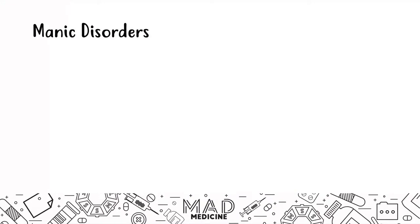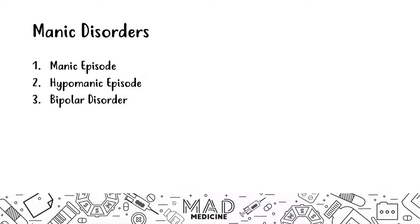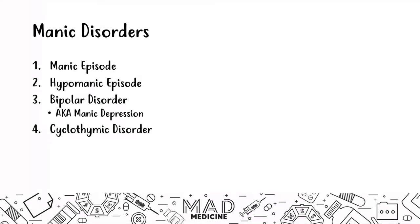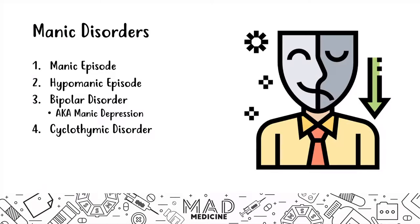For the USMLE Step 1, there are four main types of manic disorders you should know about: a manic episode by itself, a hypomanic episode, bipolar disorder (aka manic depression), and cyclothymic disorder. All of these are very important and get tested to some extent, so you should definitely know all four of these in depth.